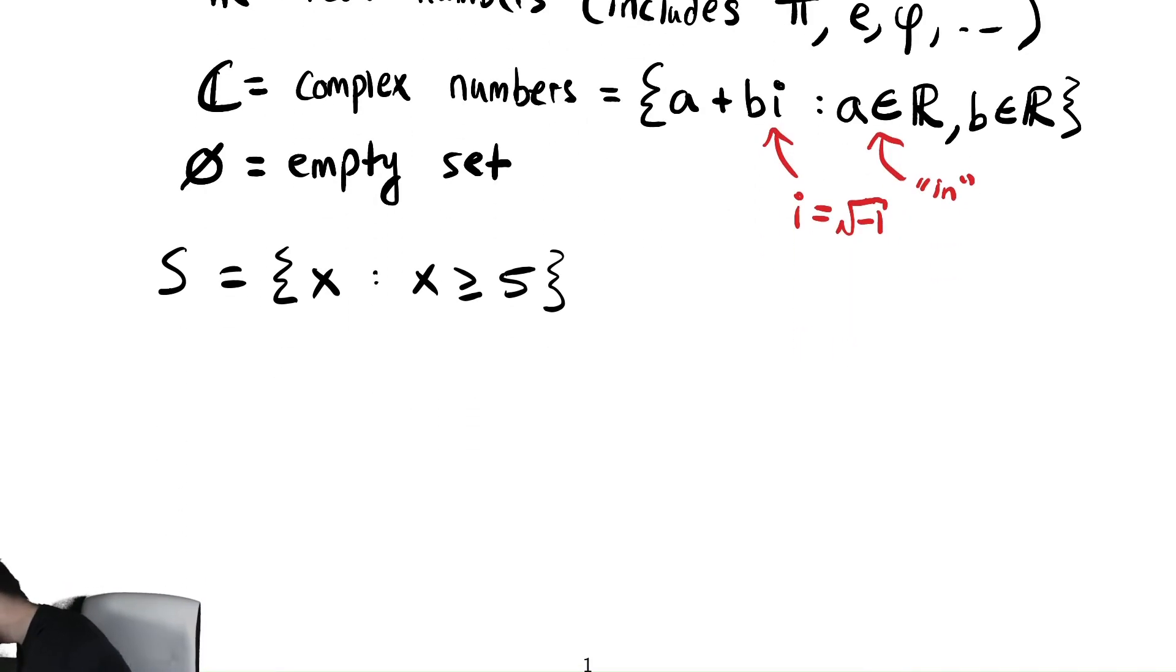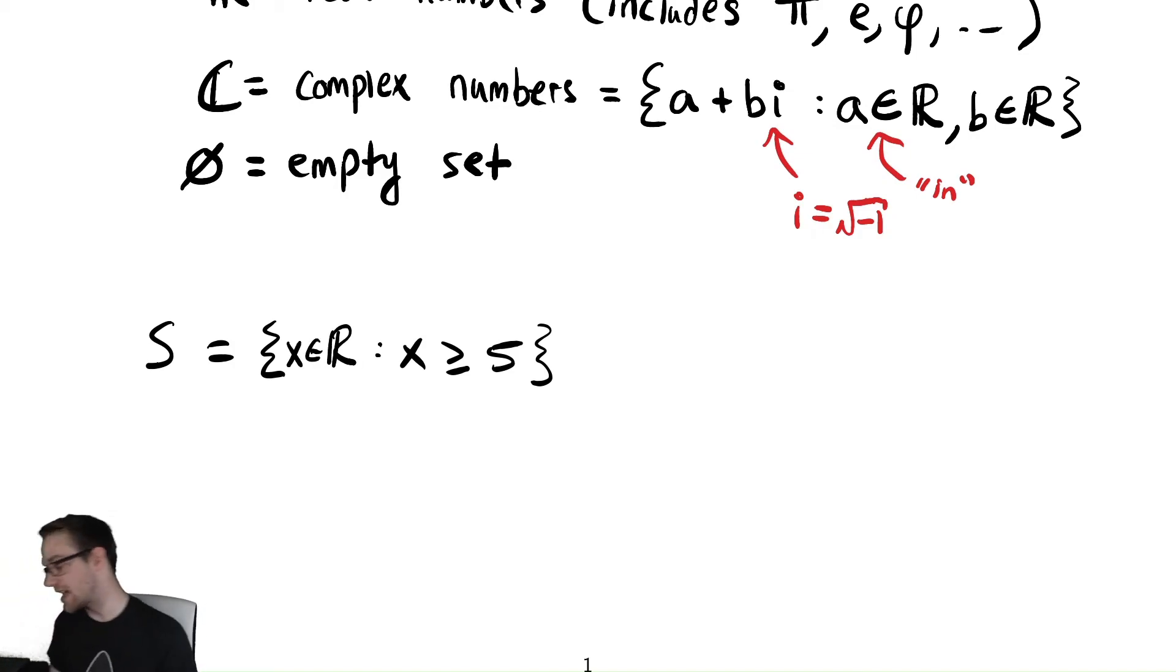So with that in mind, the set S, let's maybe make it more well-defined. Let's instead make it the set of all x coming from the real numbers. So it's the set of all x in the real numbers such that x is greater than or equal to 5. This is different than the set of all x in the integers such that x is greater than or equal to 5.